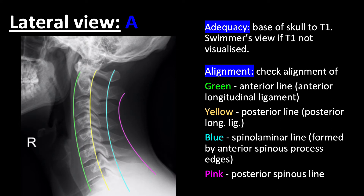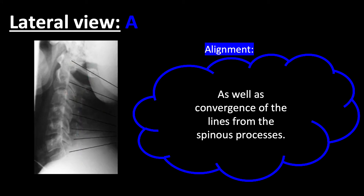The lateral view is the most informative view; however, still 50% of fractures are missed. For adequacy, we would want visualization of the base of the skull to T1, and if T1 was not visualized, we would either repeat with the patient's shoulders lowered or request a swimmer's view. For alignment, we would want alignment of the following lines: green being the anterior line, which is the anterior longitudinal ligament; yellow being the posterior line, made up by the posterior longitudinal ligament; blue, the spinolaminar line, formed by anterior spinous process edges; and pink, the posterior spinous line. We would also want convergence of the lines from the spinous processes, as seen in the picture.